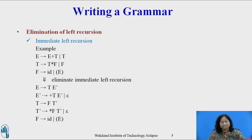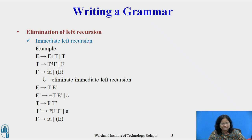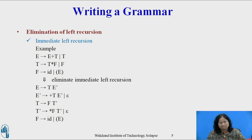Immediate left recursion example: Consider the grammar E derives E+T | T, T derives T*F | F, F derives id | (E). Eliminating the immediate left recursion for E and T, we obtain: E derives TE', E' derives +TE' | ε, T derives FT', T' derives *FT' | ε, and F derives id | (E).